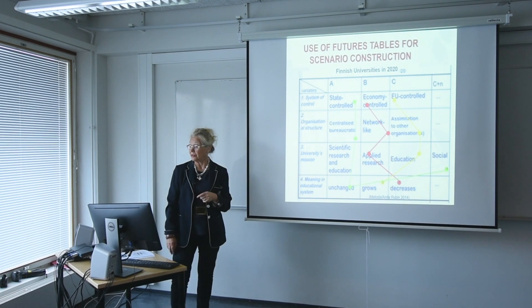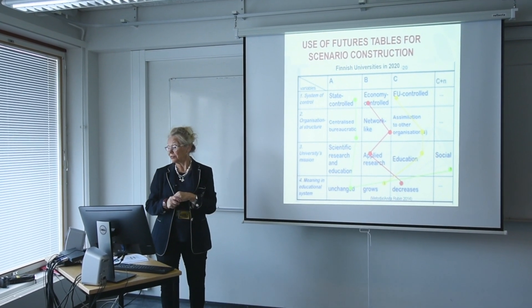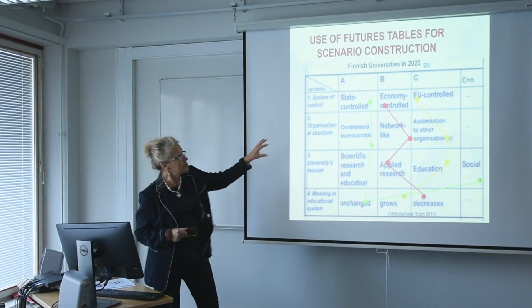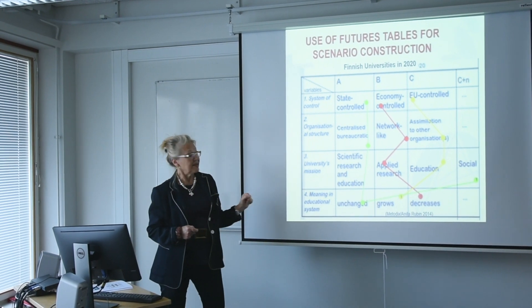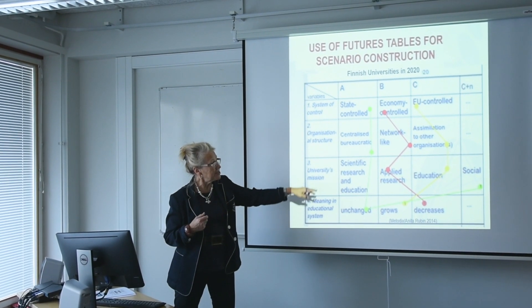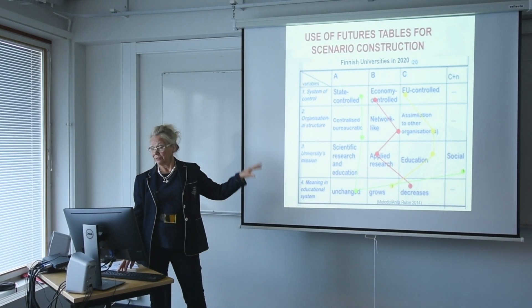This is an example of scenario work on the future of Finnish universities, done many years ago with a time horizon of 2020 using a futures table method. Variables chosen included the control system applied, organizational structure, the university's mission, and its meaning in the educational system. You fill in different states for these variables — very often in a futures workshop — and then pick combinations of different states to construct many scenarios.